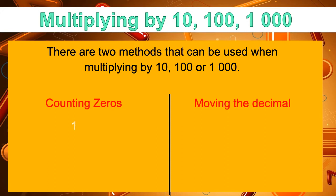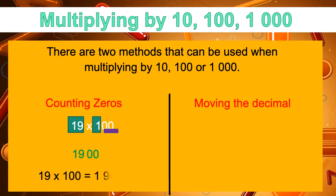Take this example: 19 times 100. To find the product, we multiply 19 times 1, which gives us 19. Then we look at the number 100 — how many zeros do you see? Yes, there are two zeros in that number. So we add two zeros behind our 19, and that gives us a whole new number. That means 19 times 100 is equal to 1,900.